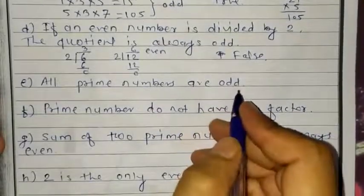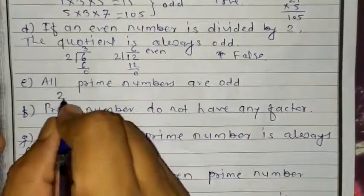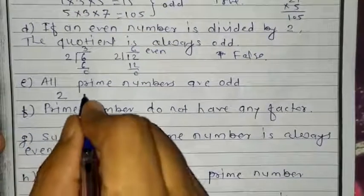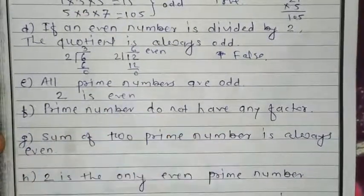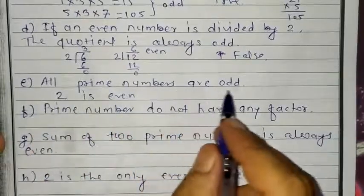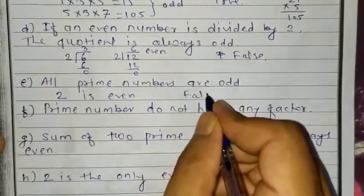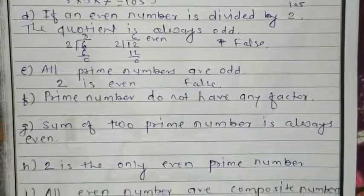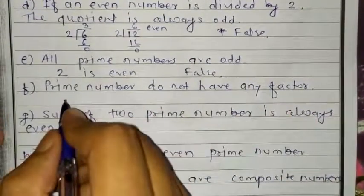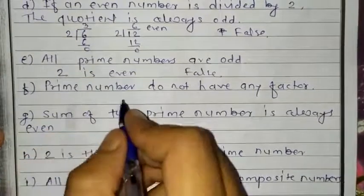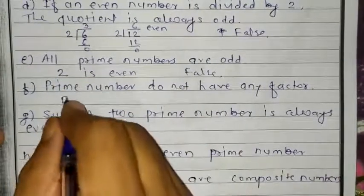Part E: all prime numbers are odd. But you know prime numbers start with 2, and 2 is an even number. The statement says all prime numbers are odd, but 2 is even. So it is false. Part F: prime numbers do not have any factors. But prime numbers have 2 factors: 1 and the number itself. So it is false.